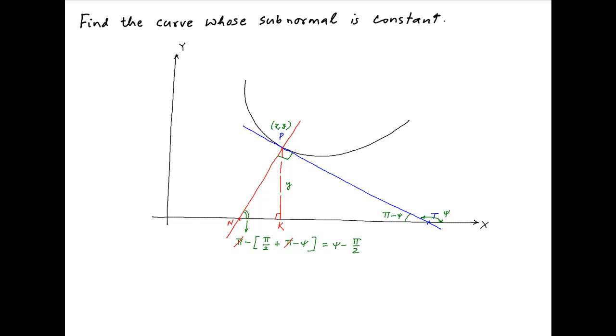Therefore, in right angle triangle ptn, the subnormal which is nk is equal to y cot(ψ - π/2), which can be written as -y cot(π/2 - ψ), which is equal to -y tan ψ.